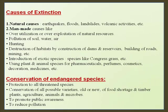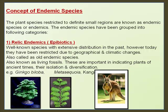Causes of extinction include natural causes such as earthquakes, floods, landslides, and volcanic activities, and man-made causes such as over-exploitation of natural resources, pollution of soil, water and air, hunting, destruction of habitats by construction of dams, reservoirs, roads, and mining. Introduction of exotic species like Congress grass, and use of plant and animal species for pharmaceuticals, perfumes, cosmetics, decoration, and medicines also contribute. Conservation measures include protection of all threatened species, conservation of all possible varieties of food, timber plants, agriculture, animals, and microbes, promoting public awareness, and reducing pollution.